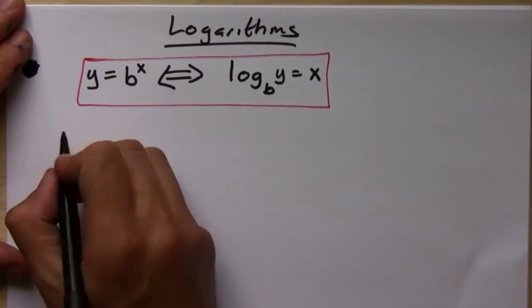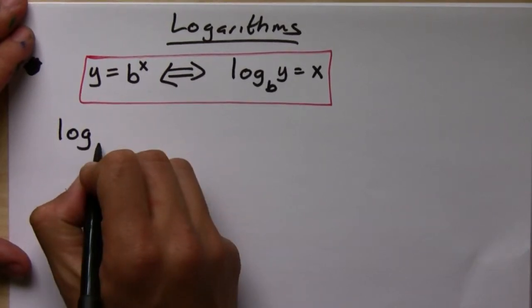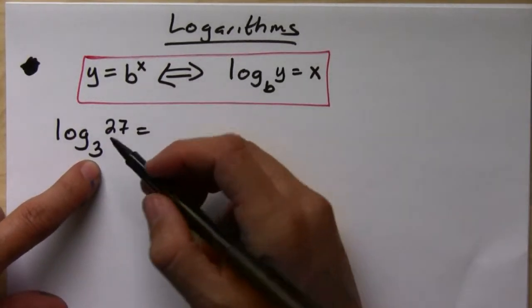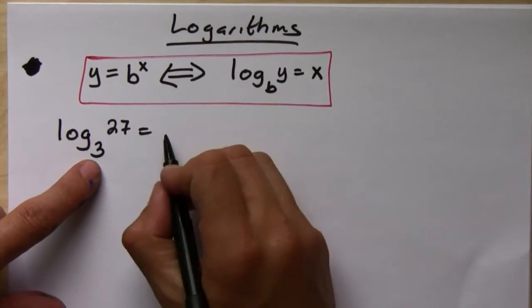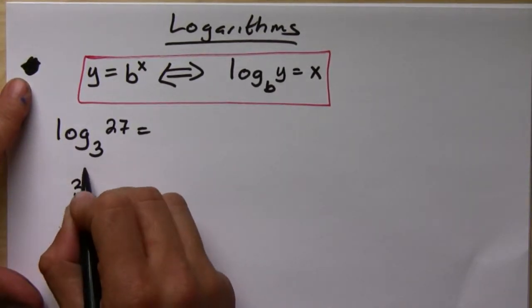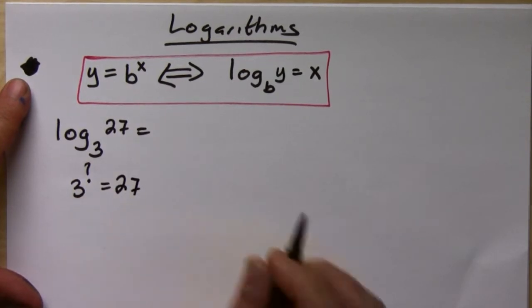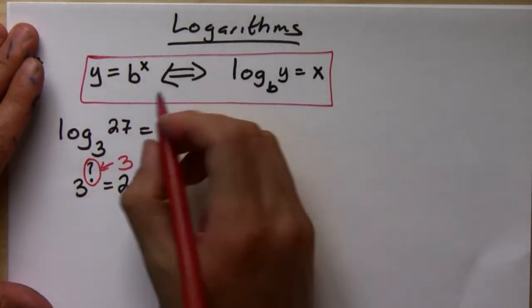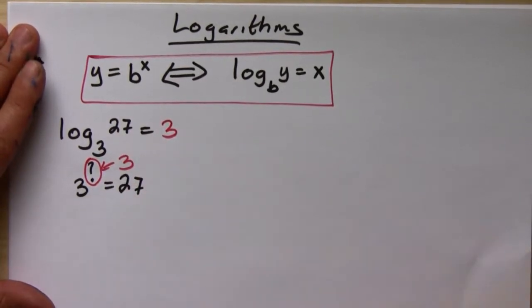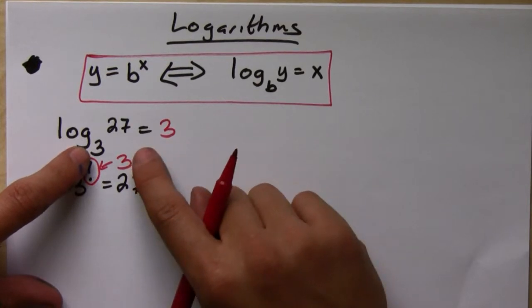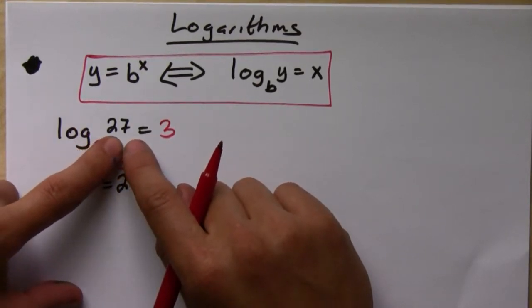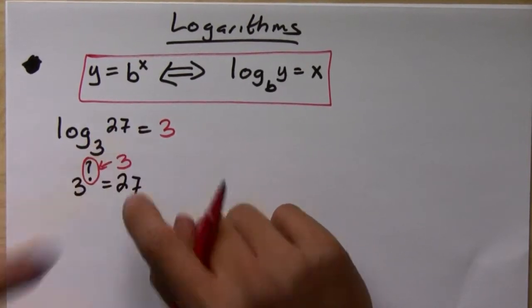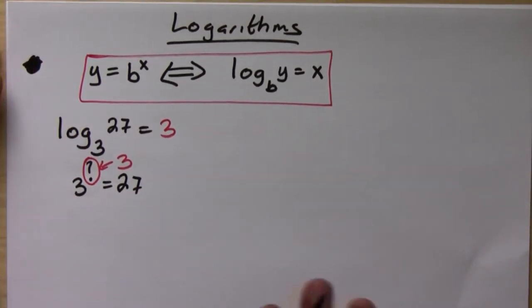For example, if you want to find log base 3 of 27, the way to interpret it is: 3 to what power gives me 27? The answer is just 3, so log base 3 of 27 equals 3. That's why it's the inverse of the exponential — it tells you what input you need to plug into the exponential function to get 27.